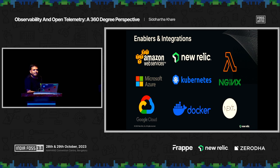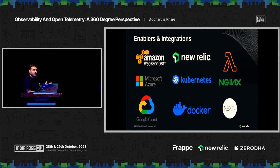Who are the enablers and what integrations are available for OpenTelemetry? We see a lot of big names — all major cloud players like AWS, Azure, and GCP are offering support for OpenTelemetry. AWS has their own distro for OpenTelemetry and you can use their lambdas to monitor application stacks running in AWS. Microsoft Azure offers OpenTelemetry tracing for Azure. New Relic is a proud enabler and contributor for OpenTelemetry and is fully compatible with the OTLP protocol. Many containers are also natively supporting OpenTelemetry.